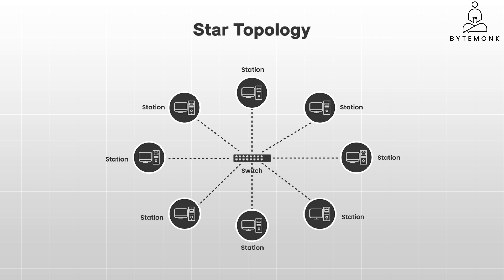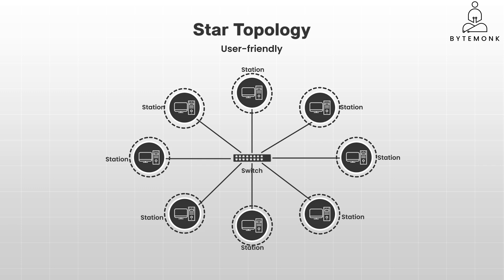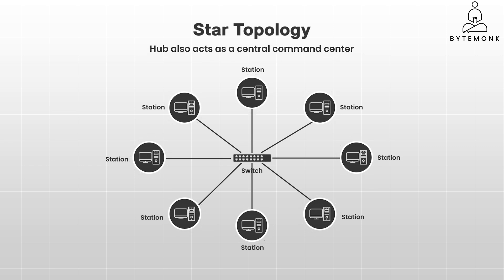Each device has its own dedicated point-to-point connection to the central hub. Adding or removing devices is relatively simple, as it only requires connecting or disconnecting the respective cable. Star topology is incredibly user-friendly — setting it up, adding or removing devices, and troubleshooting are all fairly straightforward. Each device gets its own dedicated connection to the central hub, which means smoother, faster data transfer. The hub also acts as a central command center, making it easy to monitor and manage network traffic. Even if one device malfunctions, the rest of the network keeps working.